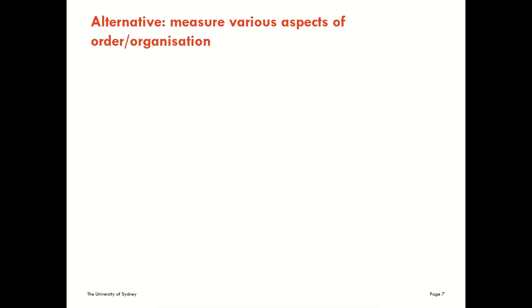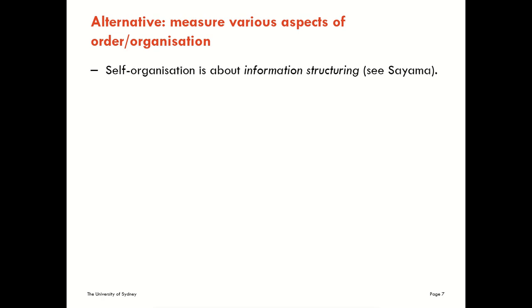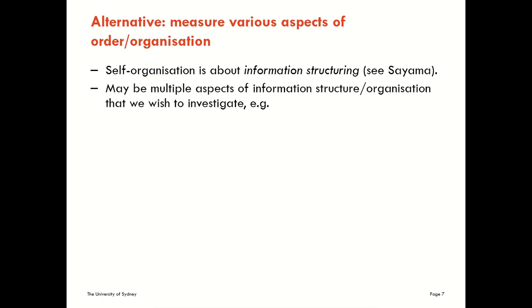As an alternative — and an alternative that we are going to follow — I want to consider measuring various aspects of order and organisation within a system, rather than directly trying to quantify order, organisation or structure at the system level as a whole. The idea is that self-organisation is about information structuring. There may be multiple aspects of information structure or organisation that we wish to investigate, rather than looking at one single measure across the system as a whole.